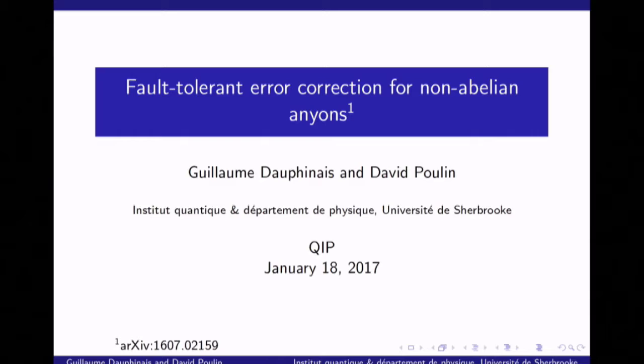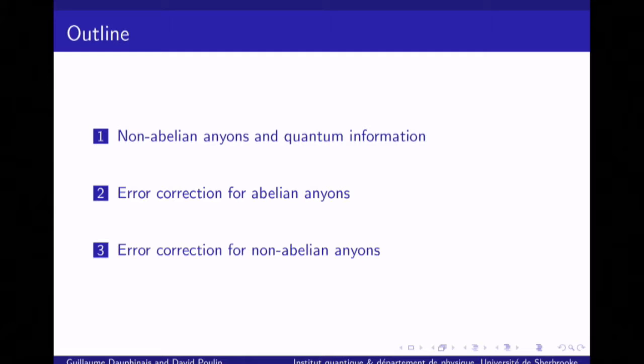I'm very glad to be here to present this work, joint work with David Poulon, about error correction and fault-tolerant error correction for non-abelian anyons. I will very briefly describe some key features about anyons and why we care about them in quantum computation. Then I will talk about error correction for the abelian case, which is well related to the toric code and seems like a good starting point to generalize to non-abelian excitations.